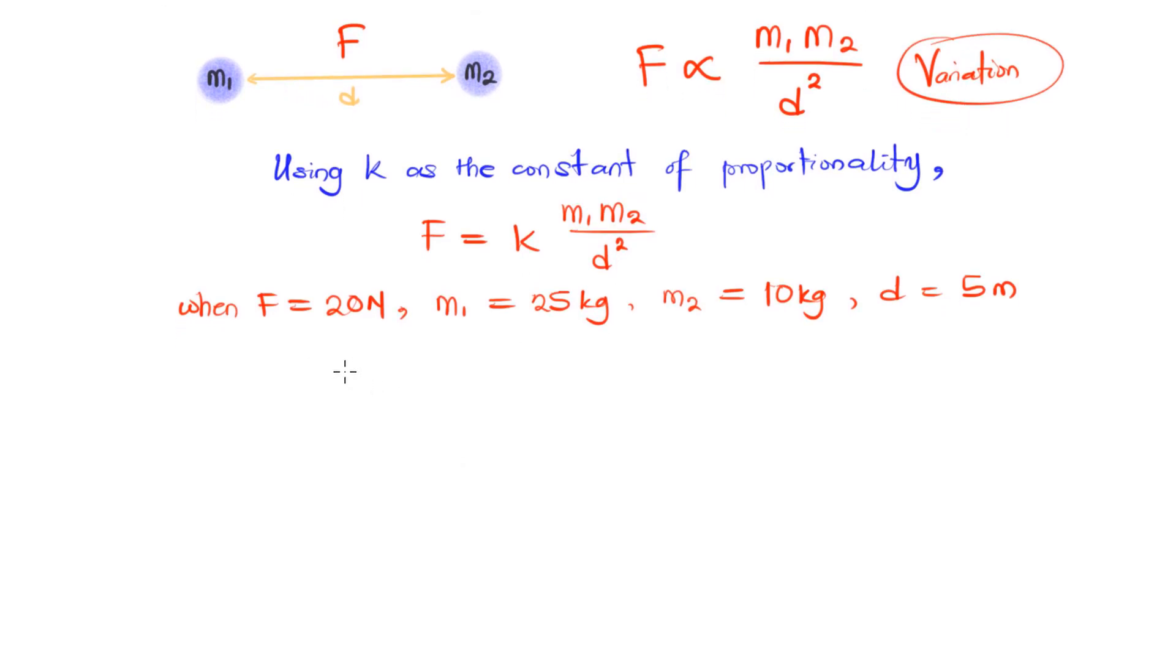If you do that, F is 20, we have K, M1 is 25 multiplied by M2, that is 10, divided by D, that's 5 meters, 5 raised to power 2.